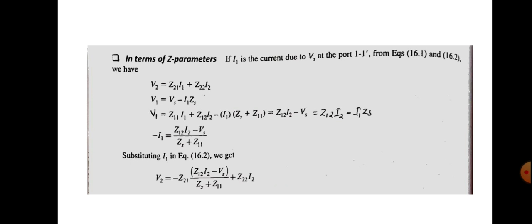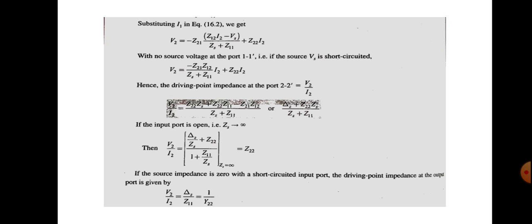When Zs = 0, we are short-circuiting the input terminals. Then V2/I2 = ΔZ/Z11, which equals 1/Y22. Comparing the two networks: when the output is terminated by a short circuit (Z_L = 0), input impedance = 1/Y11; when the input is terminated by a short circuit (Zs = 0), output impedance = 1/Y22. Remember these four equations: input/output impedance for open-circuit and short-circuit terminations.